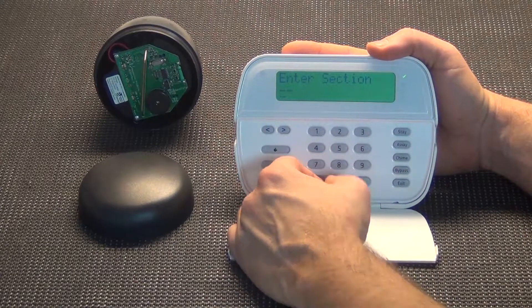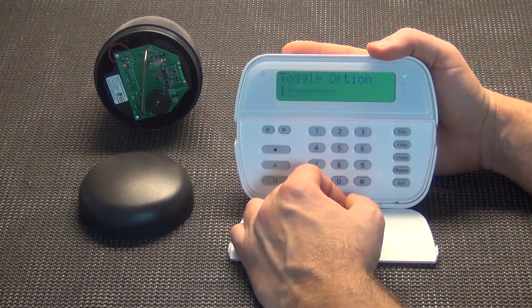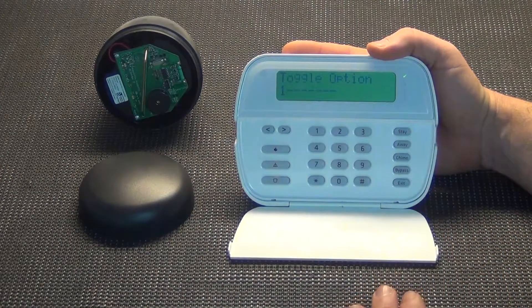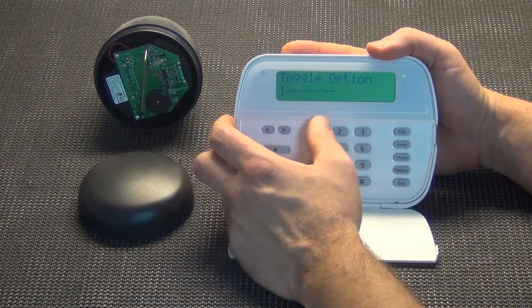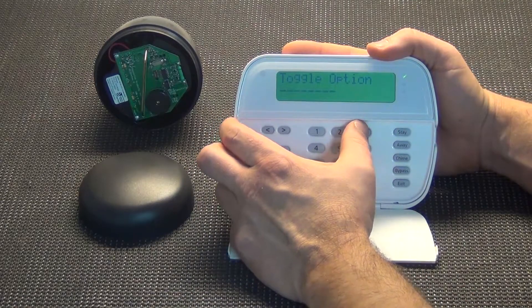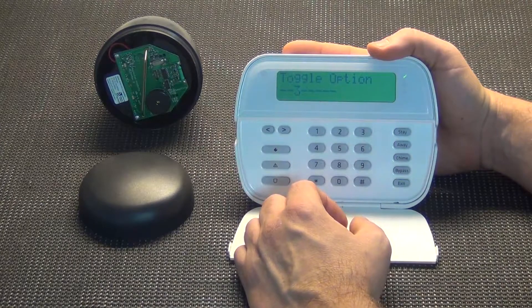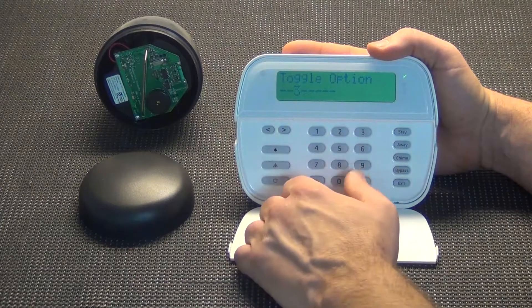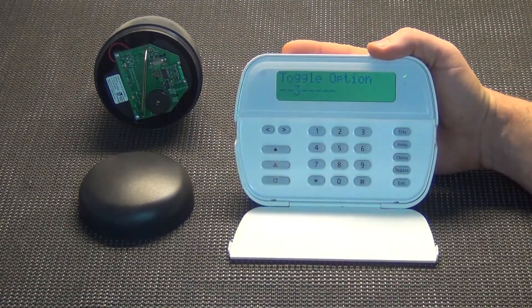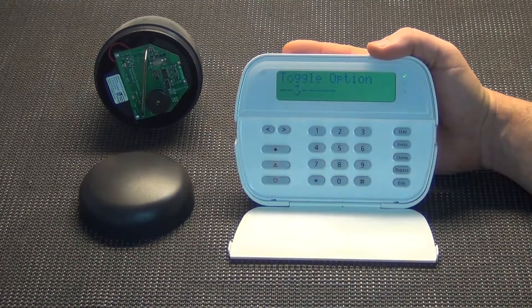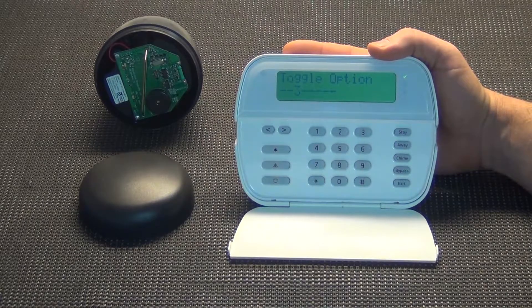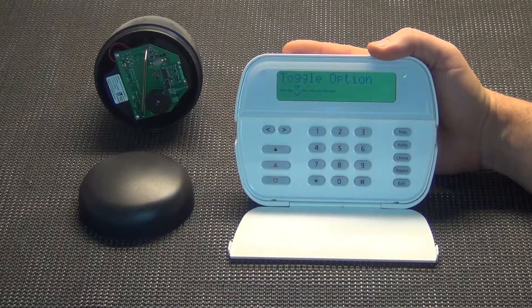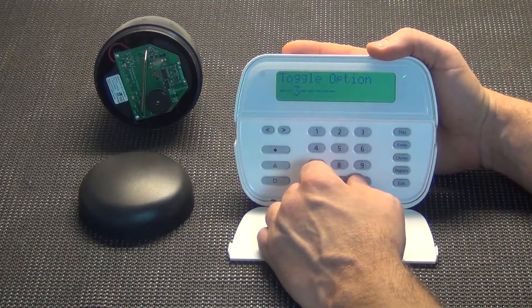We type in zero one and then toggle option one is the only one on right now. And that is the standard six beep chime. So we want to turn that off and we're going to turn on three. Toggle option three is a bing bong or a ding dong, kind of like a doorbell sounding deal. And you can differentiate between your regular door chimes and this deal. Like somebody comes up the driveway, you don't want it to sound like a door chime. You want it to sound like something else. So that's why we changed that in section 800.